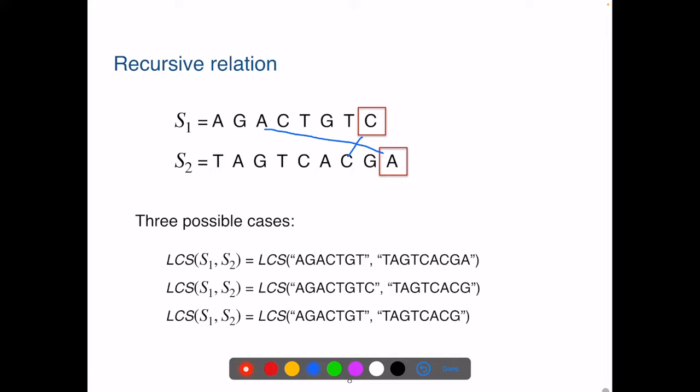So there are only three possible cases. Case one is when the optimal solution doesn't use the last letter from S1, so we can throw away that C here. We don't lose anything. The LCS of S1 and S2 will be the same as LCS of this new string and S2. Case two is when the optimal solution doesn't use the last letter A in S2. So we can throw that one away and it won't affect our result. Case three is when the optimal solution doesn't use either C or A. We don't lose anything by throwing both letters away. So the LCS of S1 and S2 will be the same as LCS of these two new strings by removing the last letter.